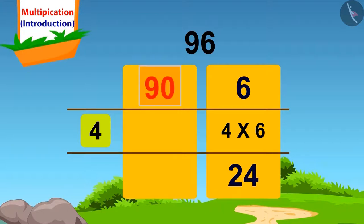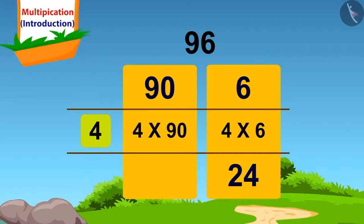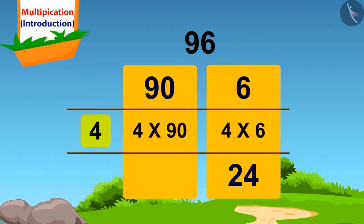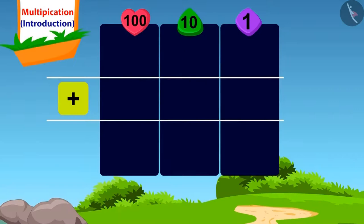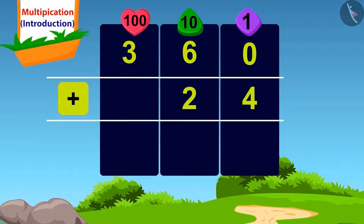Now we will multiply 90 by 4. How do we find 4 times 90? Just by placing a 0 next to the answer of 4 times 9, which is 36. We will get the answer 360. We will write this answer here. Now it is very easy — if we add 24 to 360, what do we get? 384.